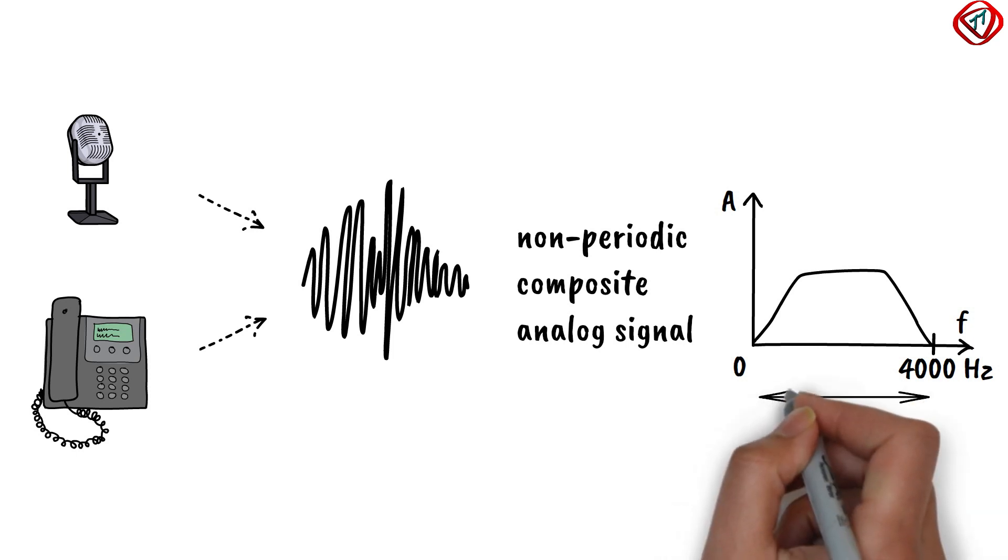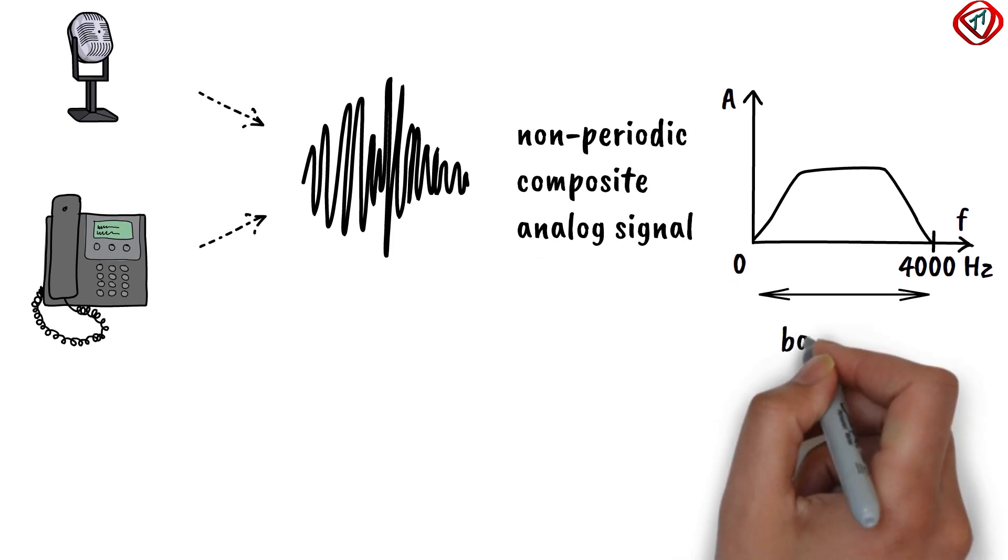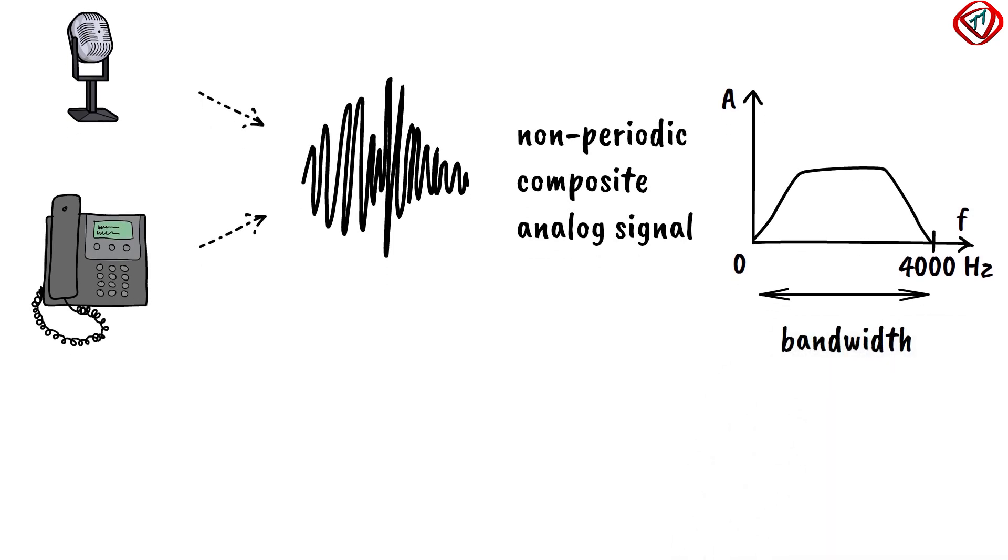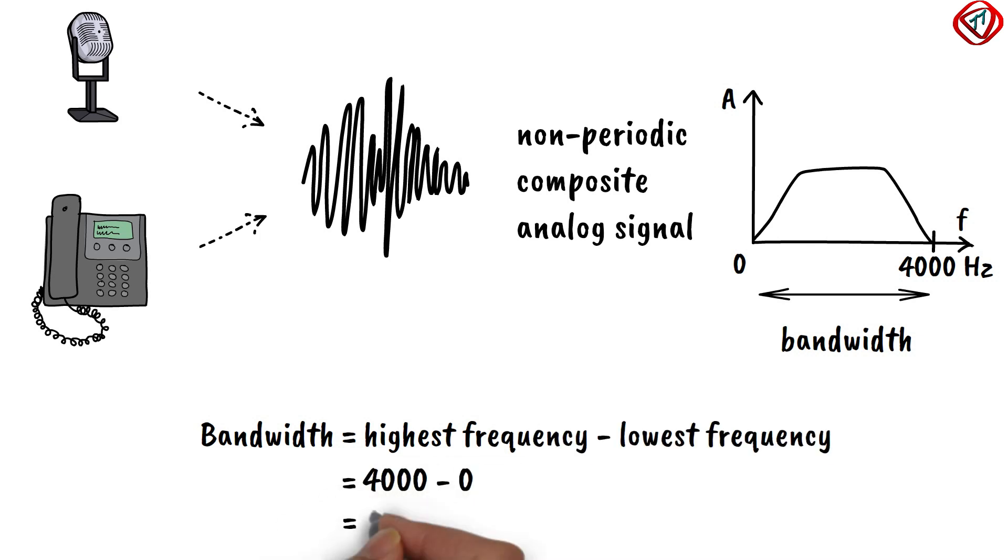The range of frequency in a composite signal is called its bandwidth. It is the difference between the highest and the lowest frequency. Here it is 4000 Hz.